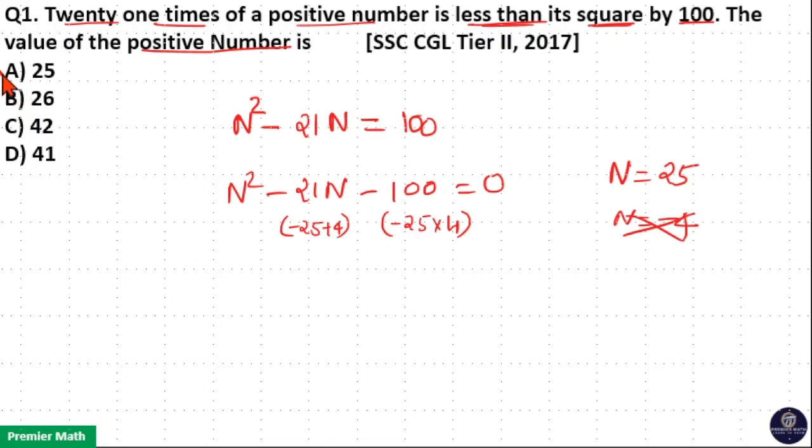N is equal to 25, option is your answer. This can be written as (N - 25)(N + 4) = 0. That means N is equal to 25 or N is equal to -4. N = -4 is not an option. N = 25 is the correct answer.